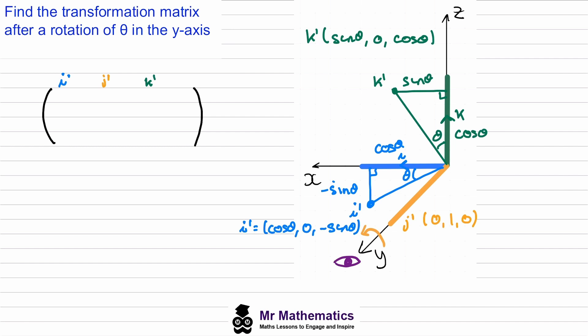So the transformation matrix for rotation about the y-axis will be: the image of i gives (cos theta, 0, negative sine theta), the image of j gives (0, 1, 0), and the image of k gives (sine theta, 0, cos theta).